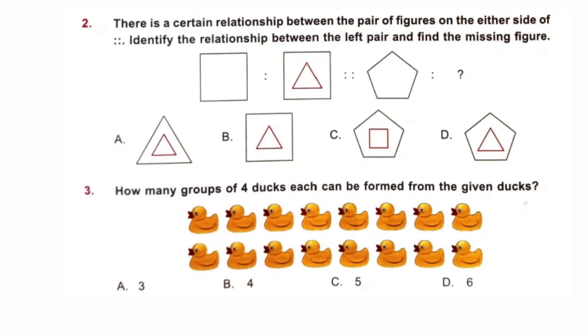Question number 3. How many groups of four dogs each can be formed from the given dogs? These are total 16 dogs. And we have to form groups in which there are four dogs in each group. In table 4, clearly four fours are 16. So, there will be four groups. Option B is correct.